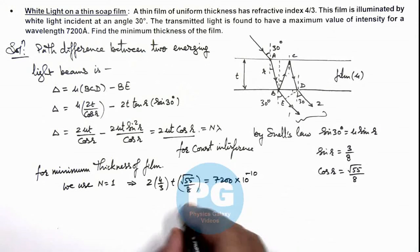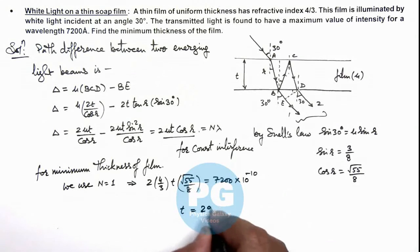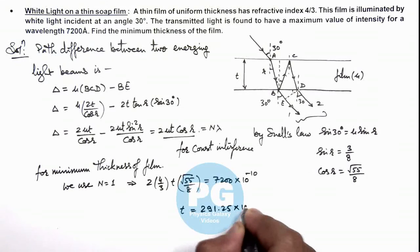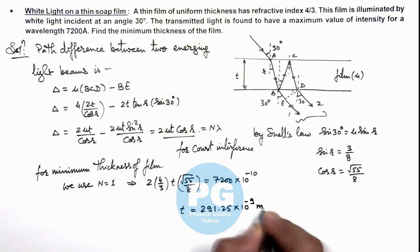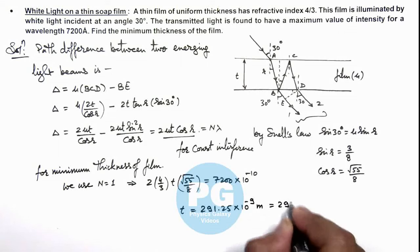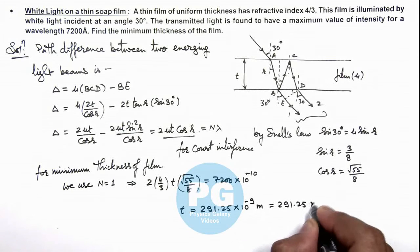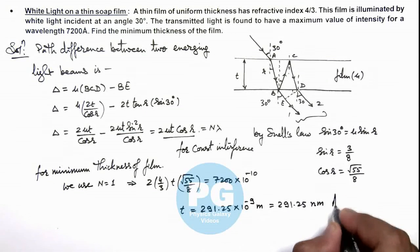And if we simplify this expression, the value of t we will get is 291.25 into 10 to power minus 9 meter, or this is 291.25 nanometer. That is the result of this problem.